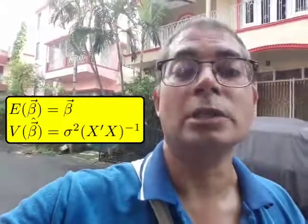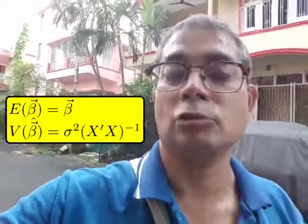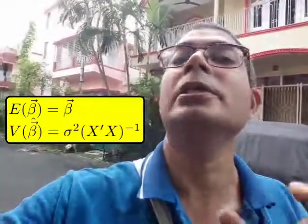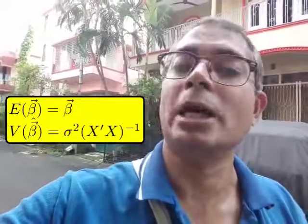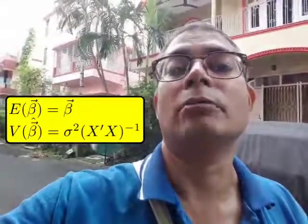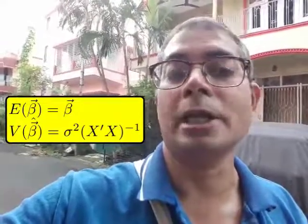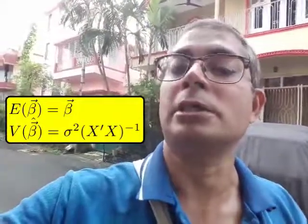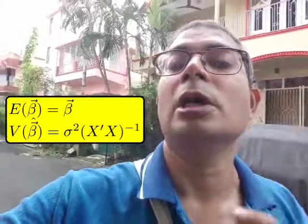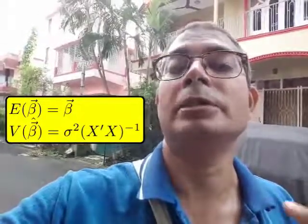So, instead, we shall work with linear combinations of beta. So, we will try to estimate not beta, but linear combinations of those beta i's, so these things I will call C prime beta. Like, if C is E1, that is the vector 1, 0, 0, 0, 0, then C prime beta will be just beta 1.